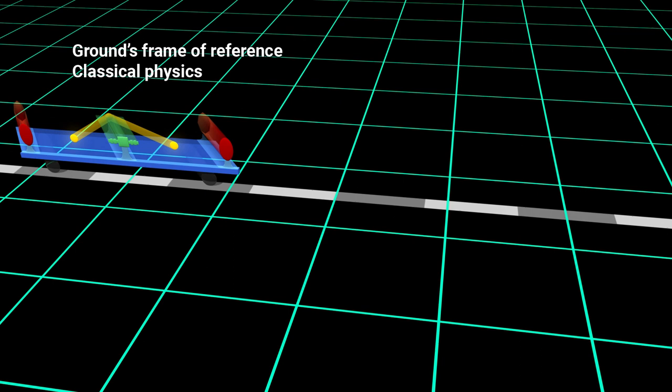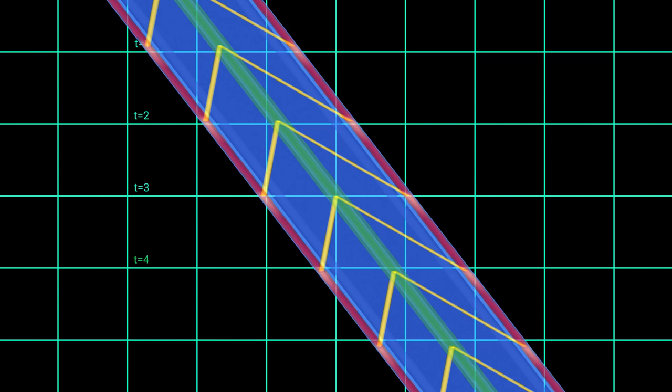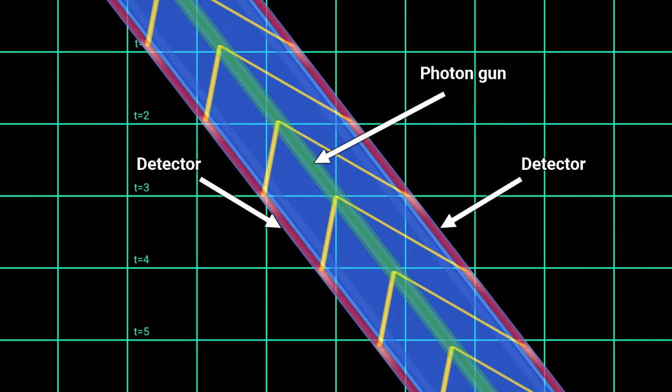Now let's draw a space-time diagram for the ground's frame of reference, according to classical physics. The cart's world lines are now slanted, since it is moving relative to this frame of reference.